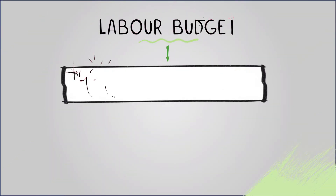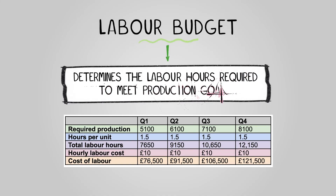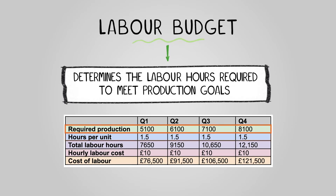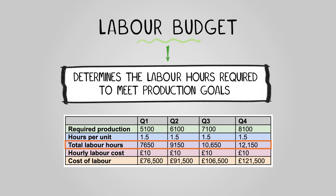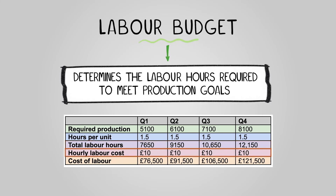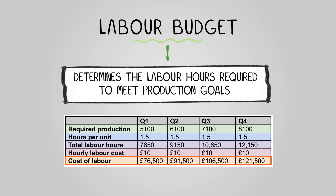The labor budget determines the labor hours required to meet production goals. Key components include required production — the number of units to be produced — hours per unit, the labor hours needed for each unit, and total labor hours, calculated by multiplying required production by hours per unit. Hourly labor cost is the wage rate per hour, and total cost of labor is calculated by multiplying total labor hours by the hourly labor cost.